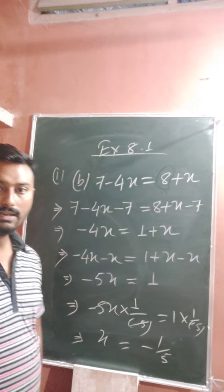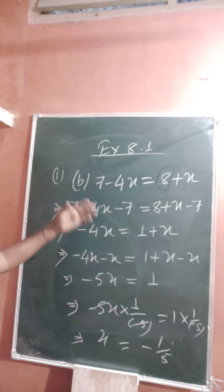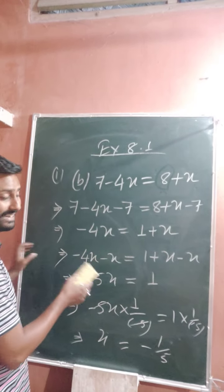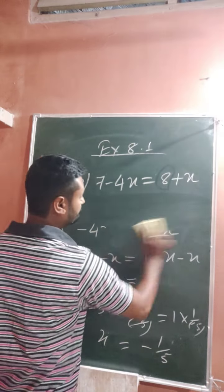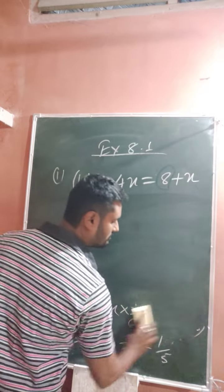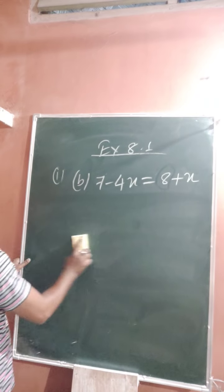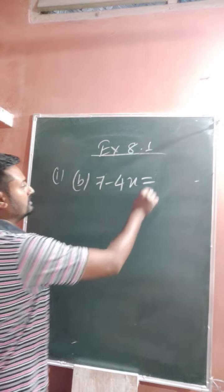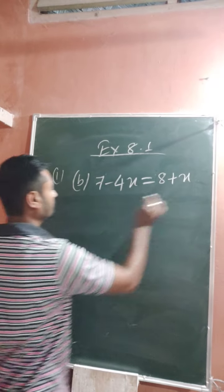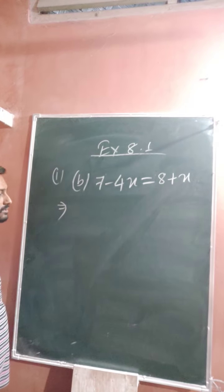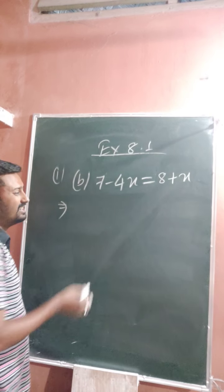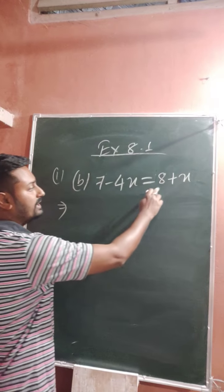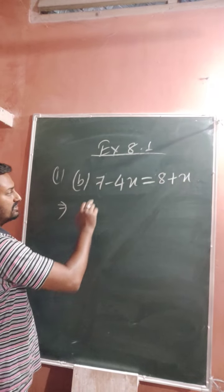That was the long method. Now solve the same question using the second method. The task is to keep x on only the left side or the right side. So: 7 minus 4x equals 8 plus x.